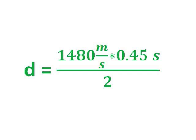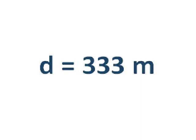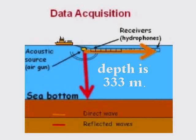Putting in their numbers, they write: small d equals 1,480 meters per second times 0.45 seconds divided by 2. Doing the math, they know that little d equals 333 meters. So the depth of the water is 333 meters.